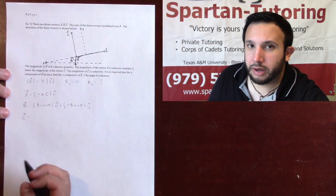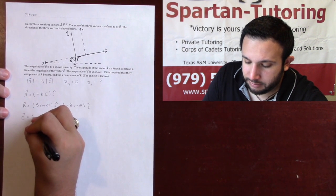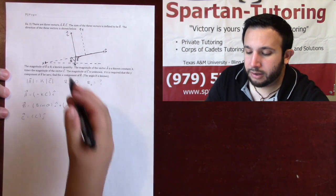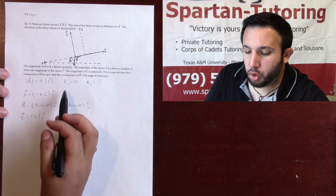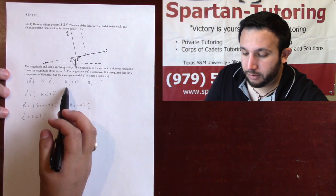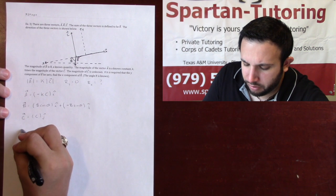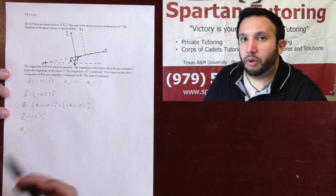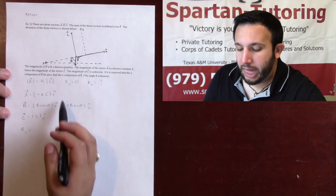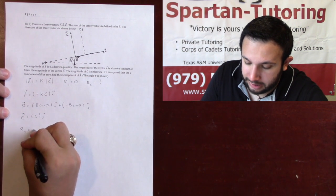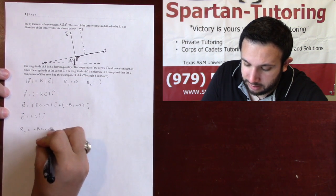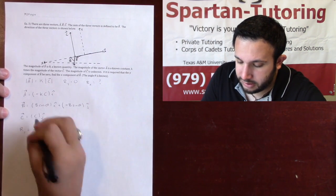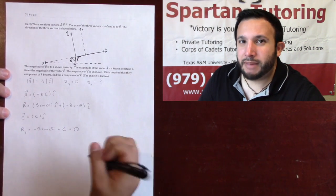Vector C is solely going in the positive y-direction, so it's just C in the j-direction with nothing in the x. Now, since the y-component of the resultant R must equal zero, we add up all the y-components: Ry equals negative b sine theta plus C, and that equals zero.